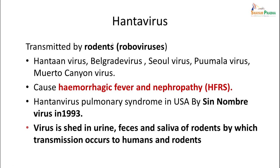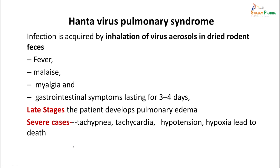Hantavirus is transmitted by rodents. It is also known as Belgrade virus, Seoul virus, Puumala virus, and Motocanyon virus. It causes hemorrhagic fever and nephropathy. Hantavirus pulmonary syndrome in the USA was discovered to be caused by Sin Nombre virus in 1993. Virus is shed in the urine, feces, and saliva of rodents, by which transmission can occur to humans and other rodents.